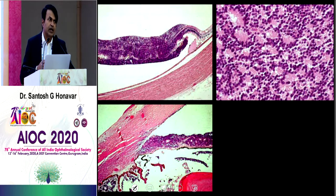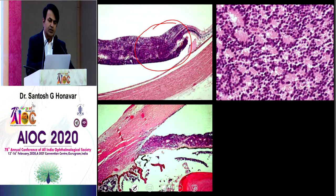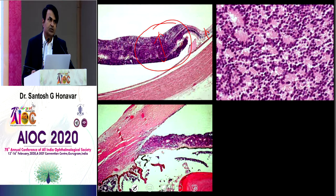Diffuse infiltrative retinoblastoma may not have a mass or calcification — it may simply manifest with generalized thickening of the retina, perhaps twice or thrice the normal thickness in the involved area. You can easily miss it on B-scan because these children will never have calcification, or it may be missed that way.